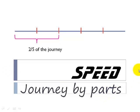Hi, good morning. Today we are going to talk about the first type of speed problem which is called journey by parts. Let's dive into the problem straight away.